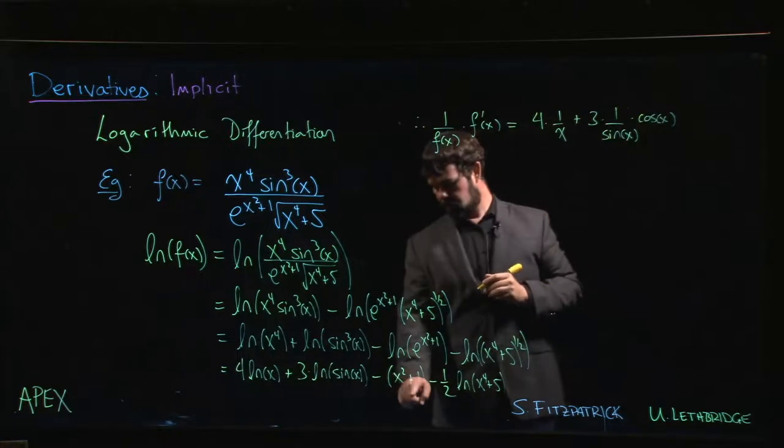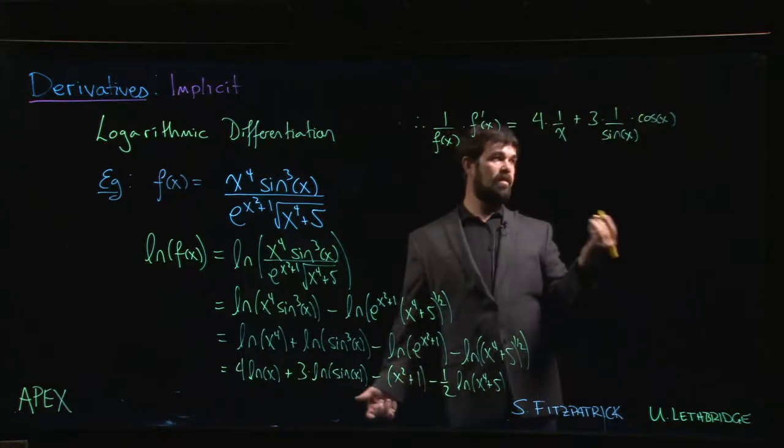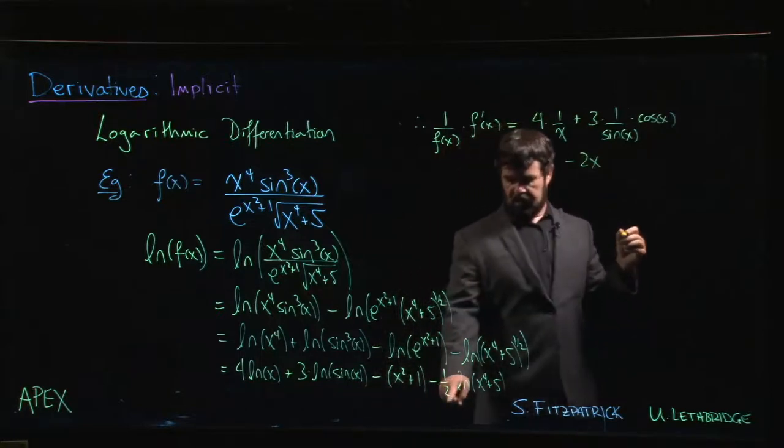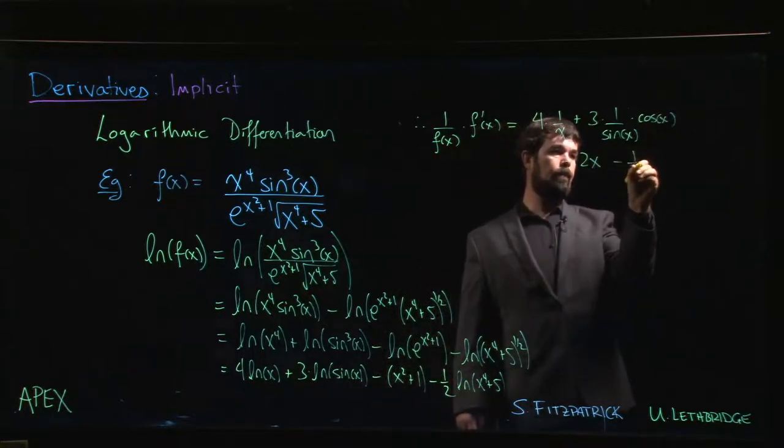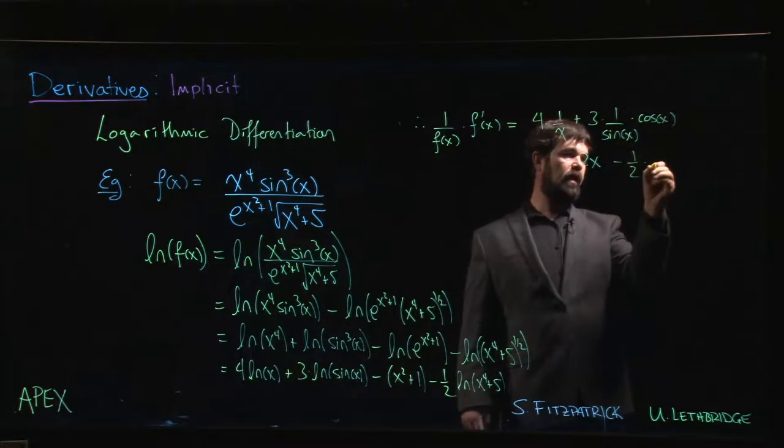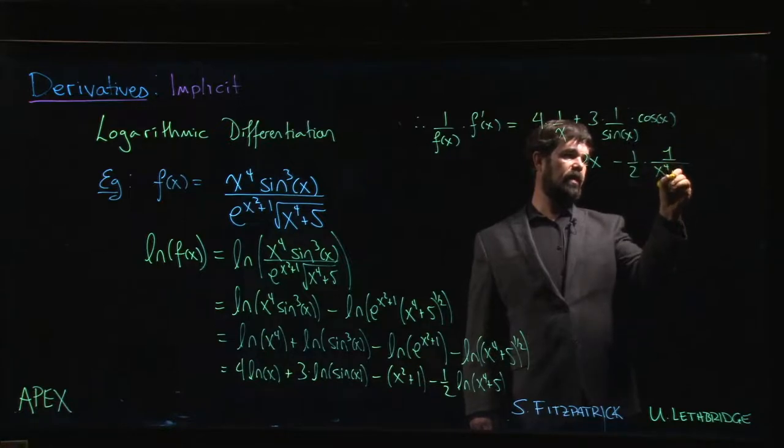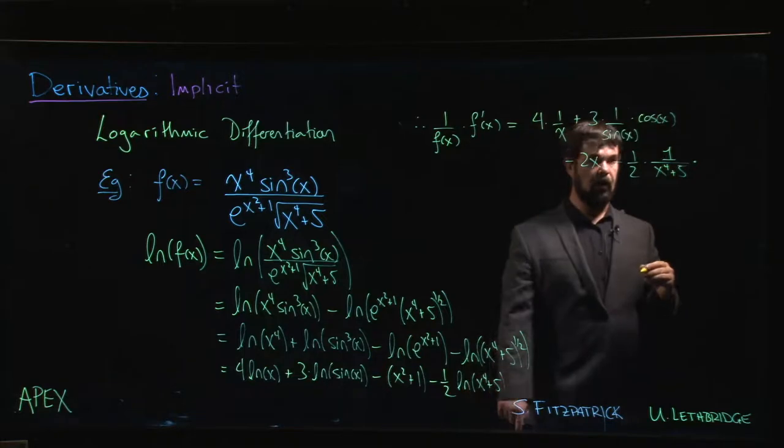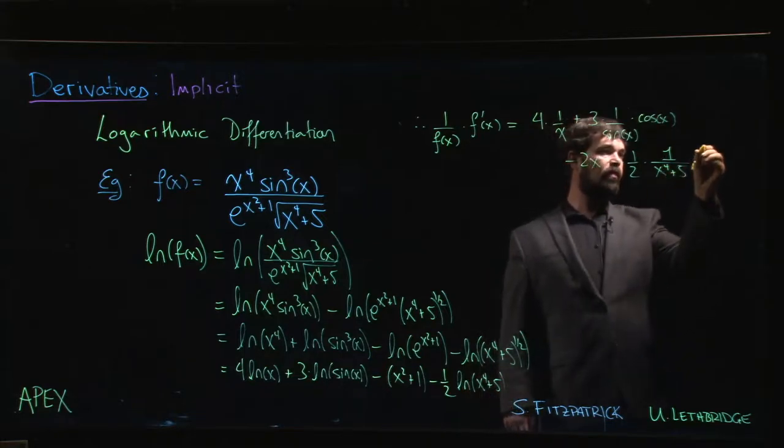x squared plus 1—the derivative is simply 2x. And finally here, we have minus one half. Again, take the derivative of the natural log, so we get 1 over whatever is inside the natural log, but then we have to multiply by the derivative of that inside. So the derivative of x to the 4 plus 5 is 4x cubed.